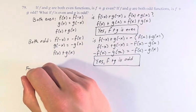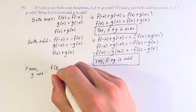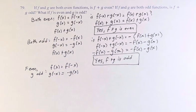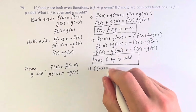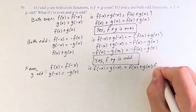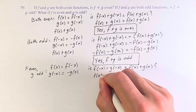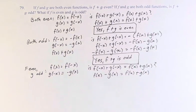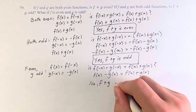Finally, f of x equals f of negative x because it's even, and g of negative x equals negative g of x because it's odd. Is f of negative x plus g of negative x equal to f of x plus g of x — is it even? Well, let's find out. We can plug in f of x for f of negative x, so we have f of x, and g of negative x equals negative g of x, so minus g of x. Does this equal f of x plus g of x? No — f of x minus g of x is not the same as f of x plus g of x, so no, f plus g is not even.